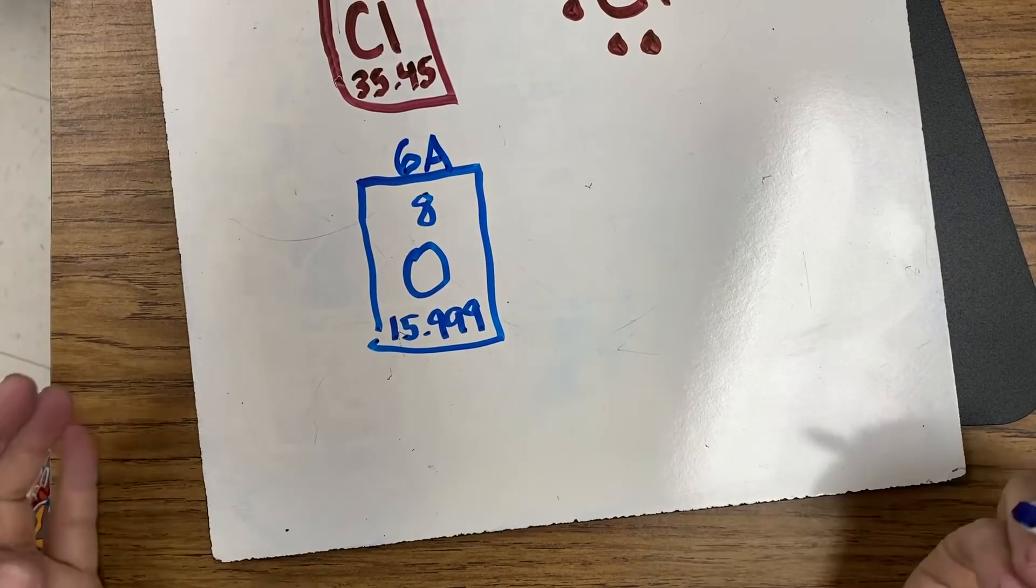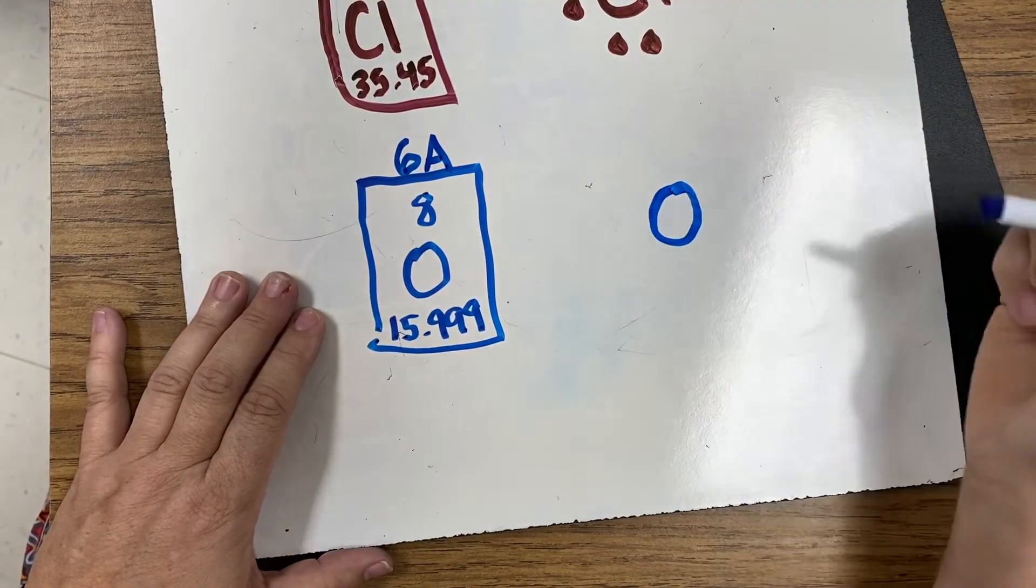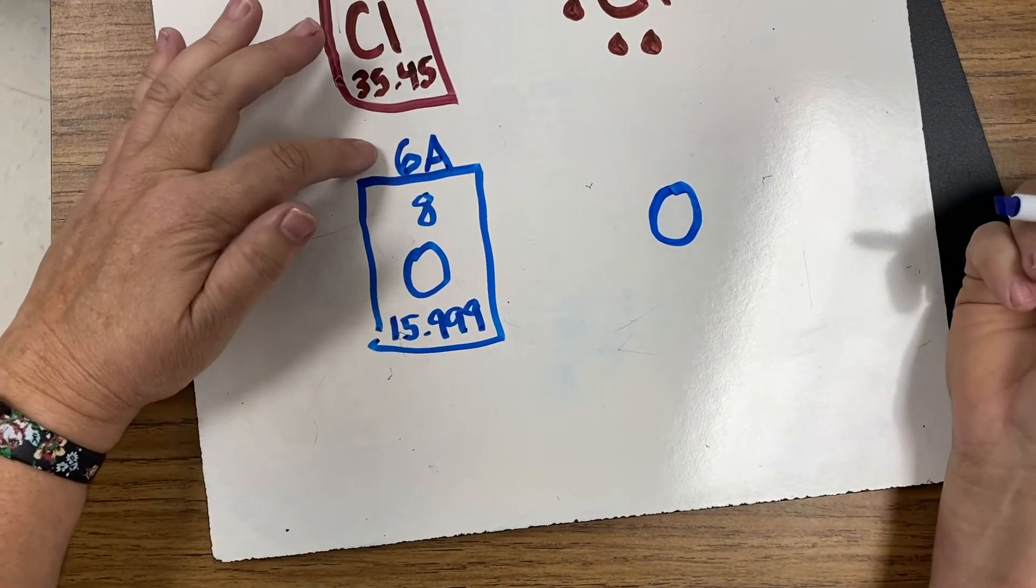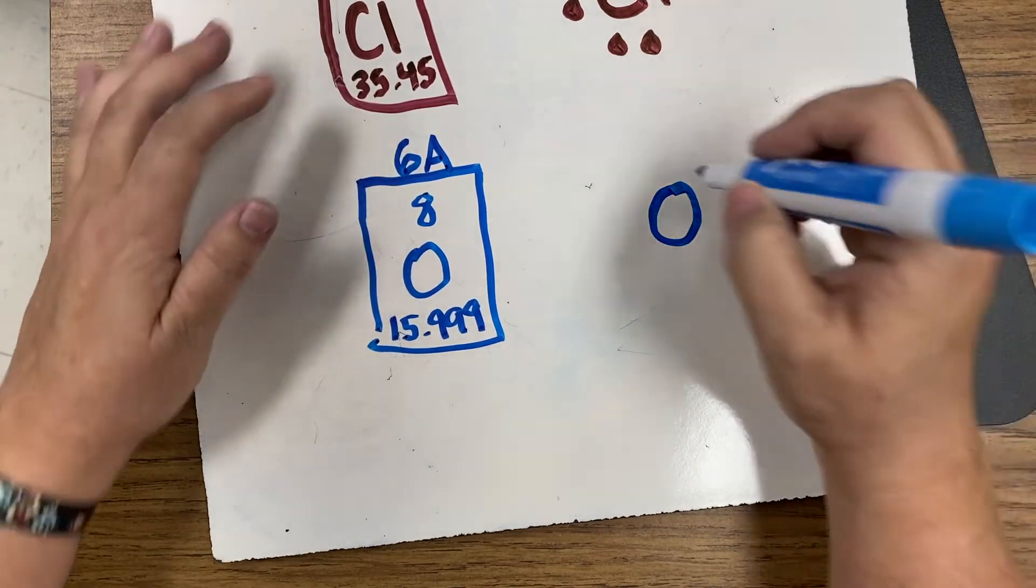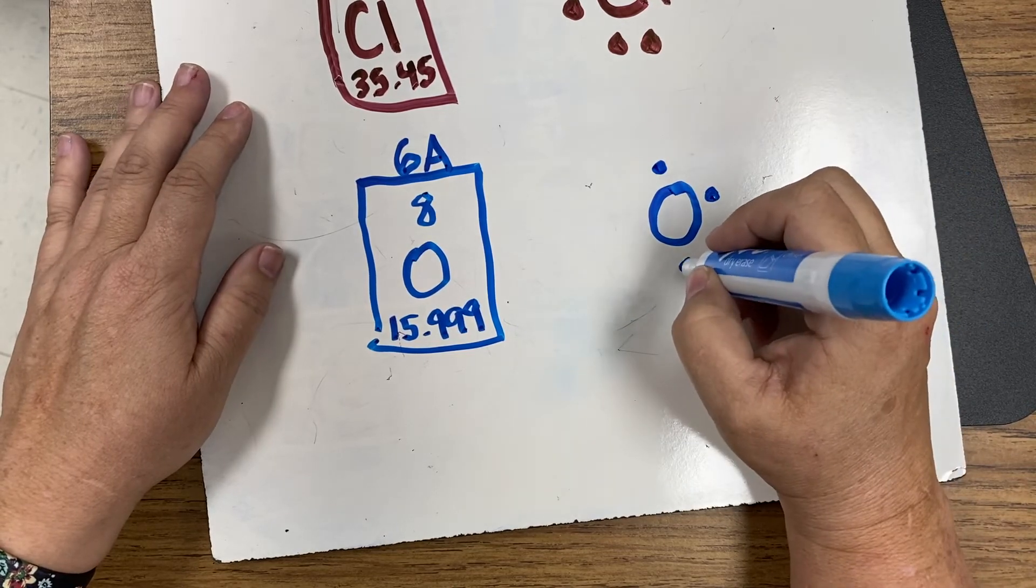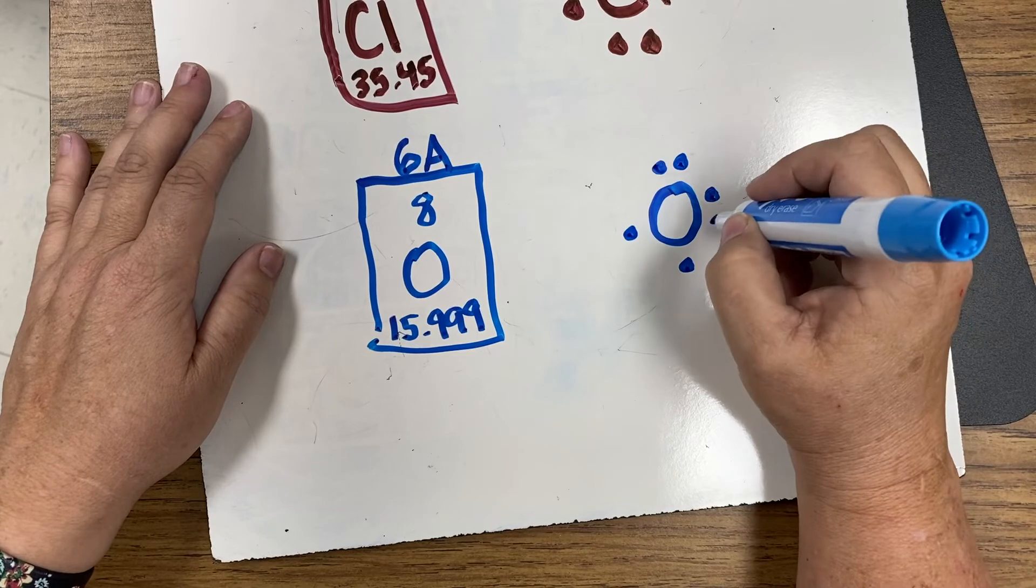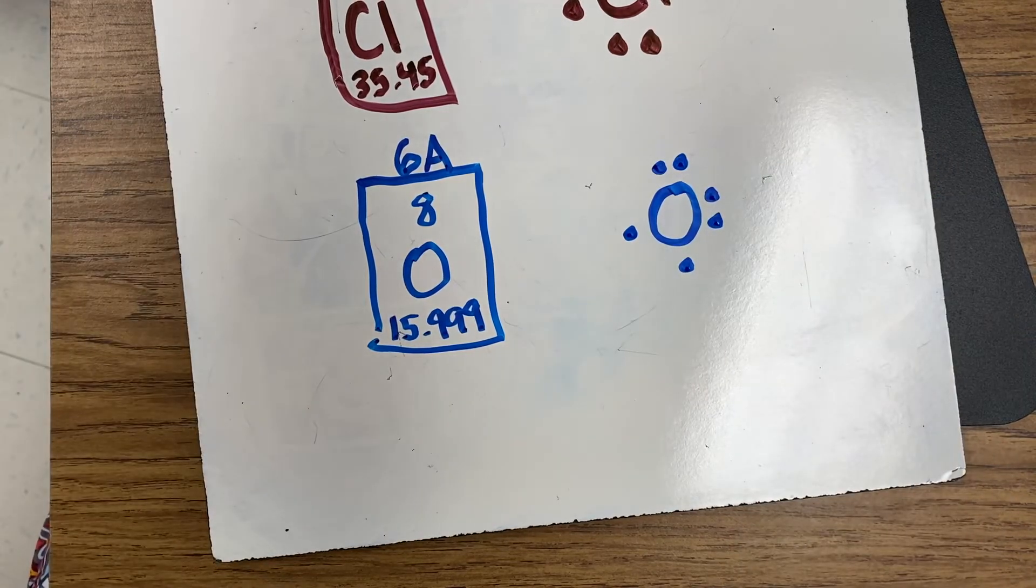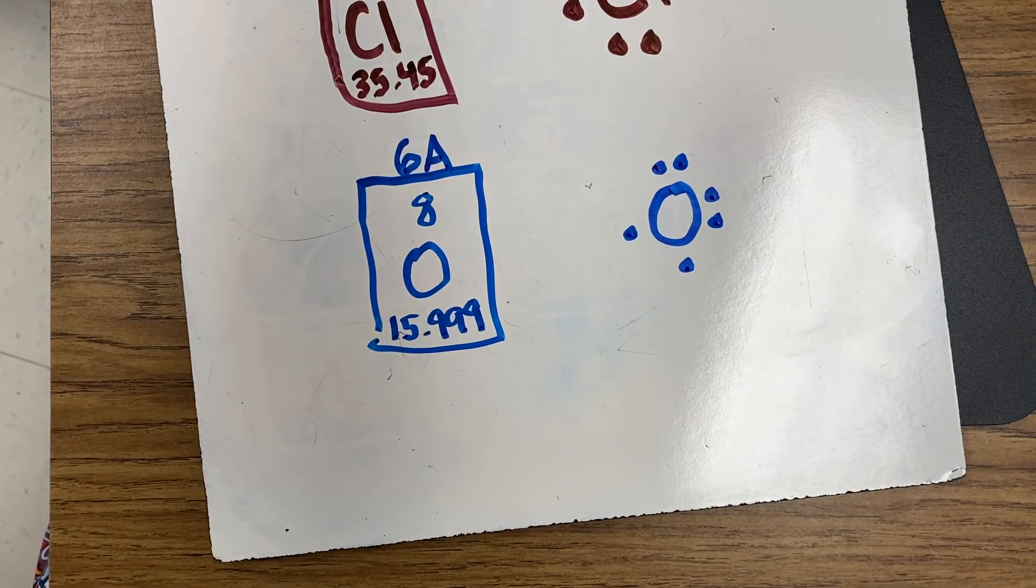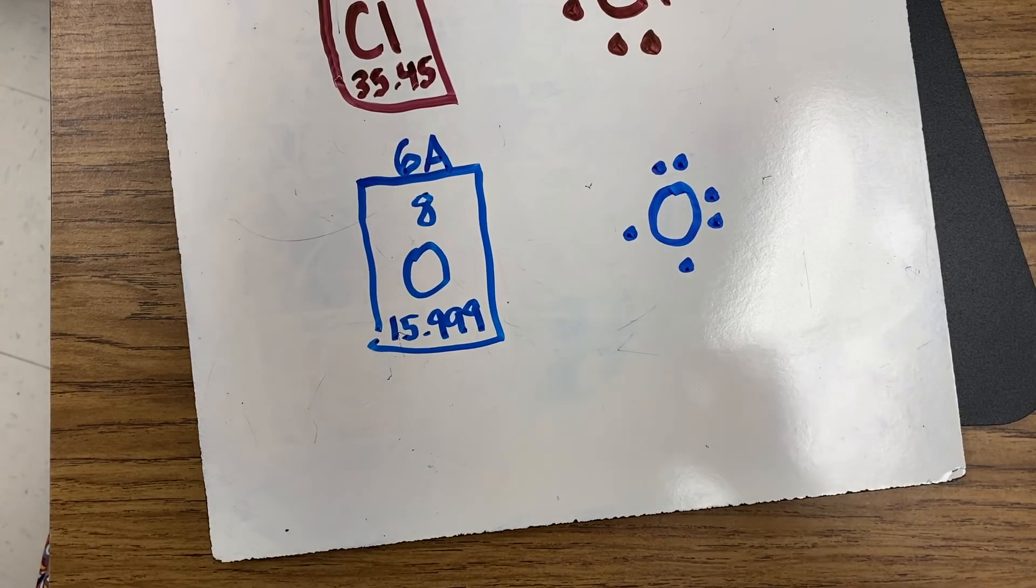Okay, so to draw the Lewis dot, here's our oxygen. And we need six electrons, because it's 6A, valence electrons, one, two, three, four, five, six. All right. So hopefully you understand how to do Lewis structures, Lewis dot structures with our valence electrons.